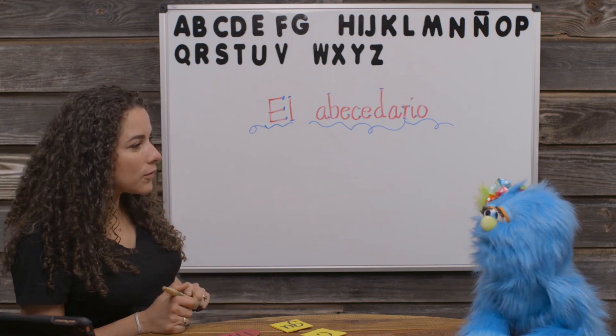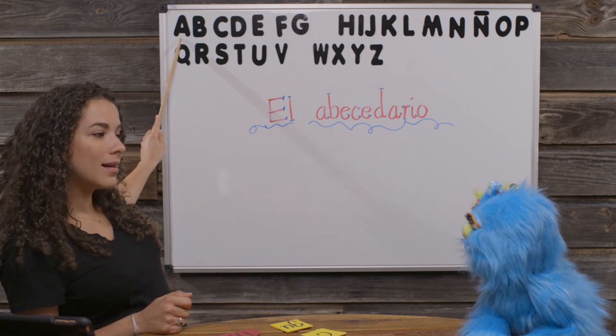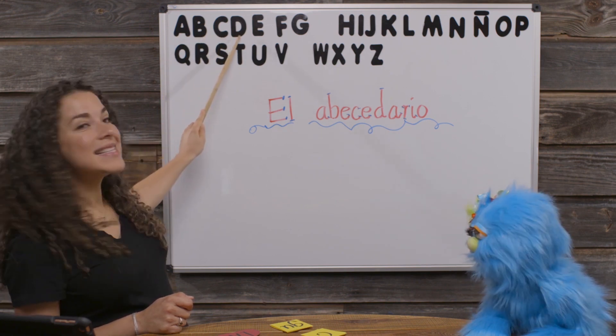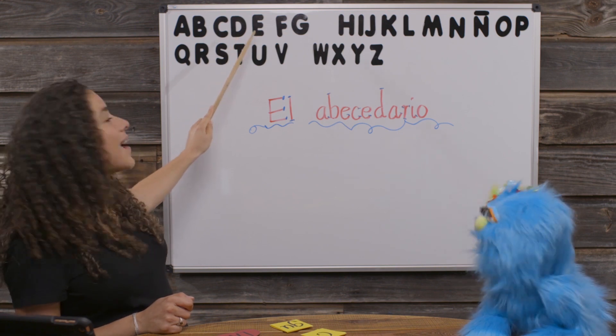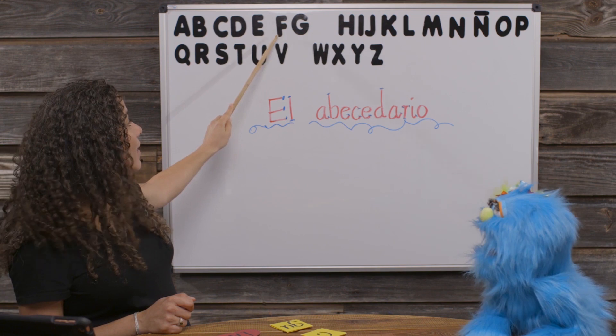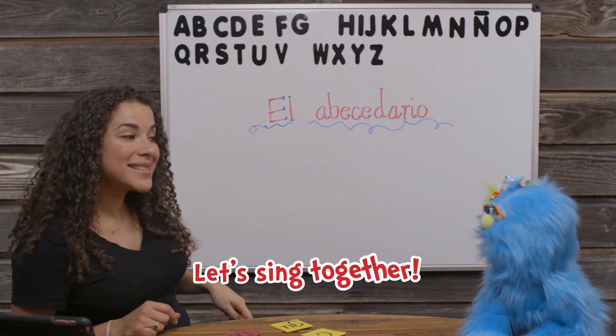Can you say it with me, Rufy? We have A, A, B, B, C, C, D, D, E, E, F, F, G. El abecedario.